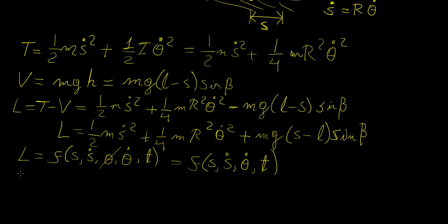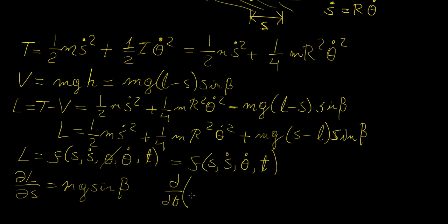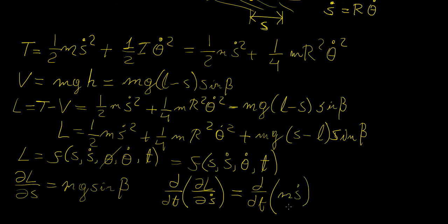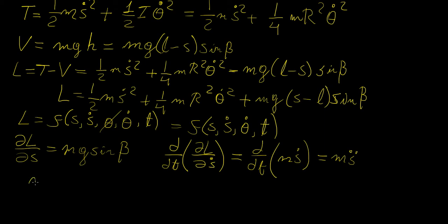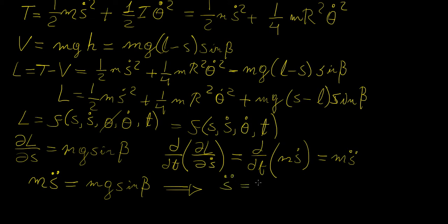Now we apply the Euler-Lagrange equations for the two variables. For s: the partial derivative of L with respect to s gives mg sine beta, while d/dt of the partial derivative with respect to s-dot gives m s-double-dot. Setting these equal, the first equation of motion is m s-double-dot equals mg sine beta, or simply s-double-dot equals g sine beta.